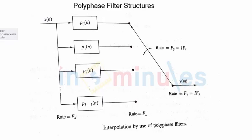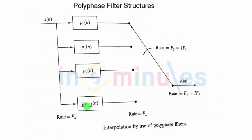So this is how the whole system will look like. You can see x of n is the input. Now instead of having one single filter, we have a bank of filters. The total number of filters will always be equal to capital I. You can see the first filter will have the impulse response P0, P1, P2 up to P of I minus 1.